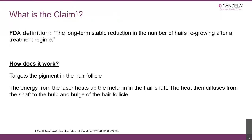The FDA definition is the long-term stable reduction in the number of hairs regrowing after a treatment regime. It's important to remember we're talking about permanent hair reduction and not permanent hair removal, partly because various factors — particularly hormones and certain diseases — can stimulate new hair to grow. How does it work? We're targeting the pigment within the hair follicle — the eumelanin rather than the pheomelanin.